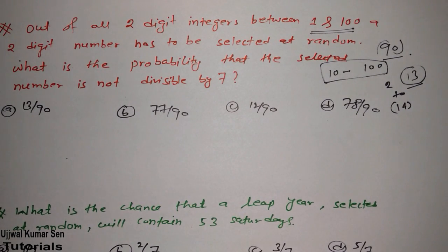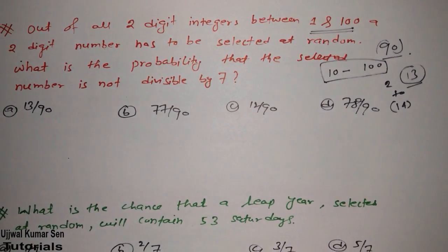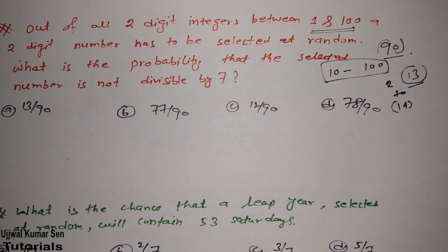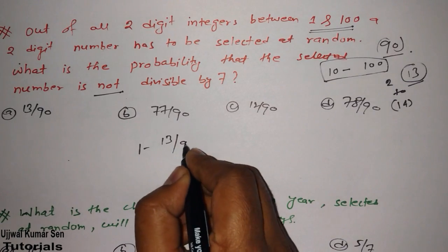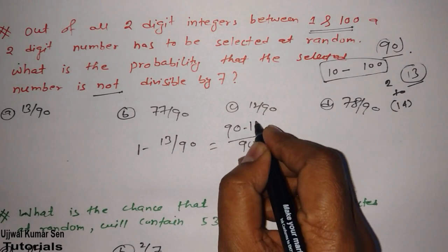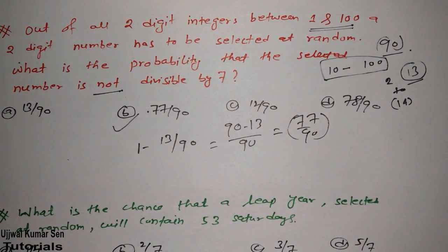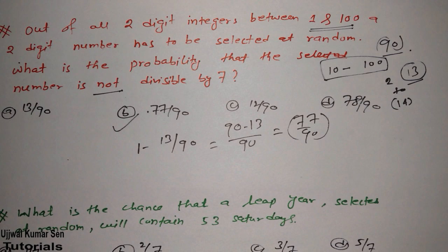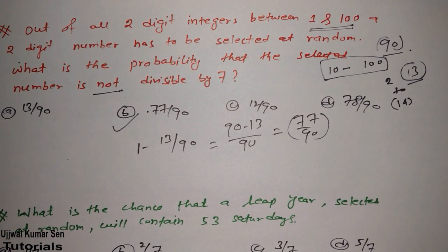So if the question has been asked, here you can make mistake. You will, what you will do? 13 by 90. That's the wrong answer. So what is the right answer? That is here. Not divisible by this. That means 1 minus 13 by 90 is the right answer. 90 minus 13, 77 by 90. So right answer is B, not A. Got it? Where you can make mistake and how you can solve this question? I am sure you got it. If you did not, then go back and watch this video again.